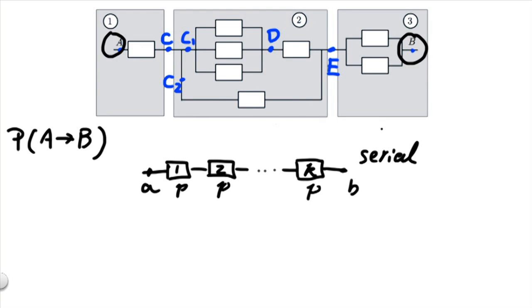In the first structure, which we call the serial structure, we have a collection of K components, each one having probability P of being good, connected one next to each other in a serial line. Now in this structure, in order for there to be a good path from A to B, every single one of the components must be working. So the probability of having a good path from A to B is simply P times P, and so on, repeated K times, which is P raised to the kth power.